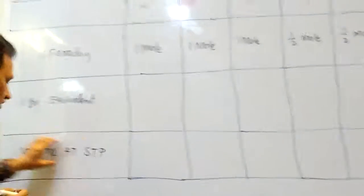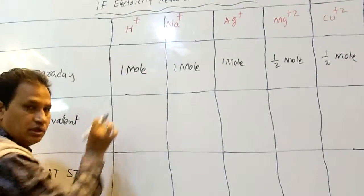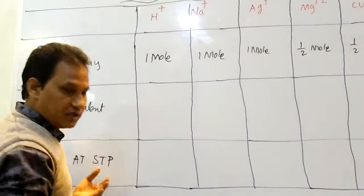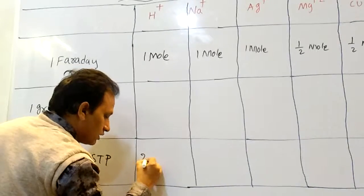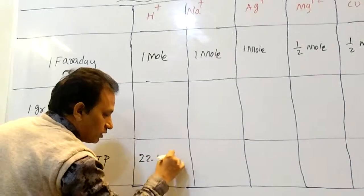Here, volume at STP. Volume at STP means one mole, one mole volume occupied at STP is 22.4 liters.